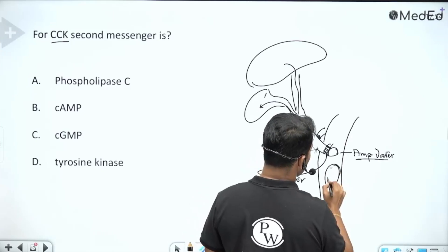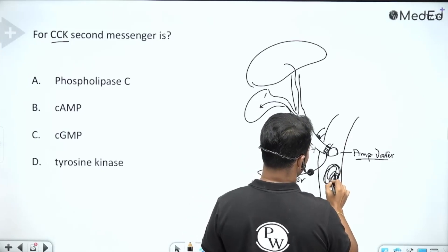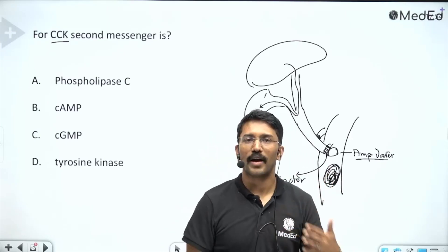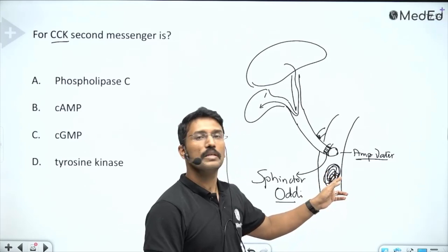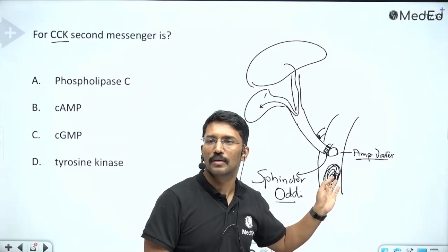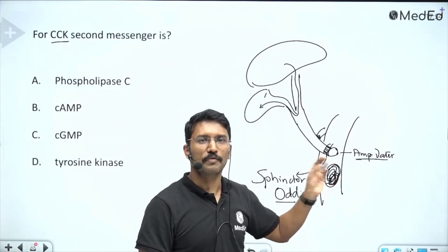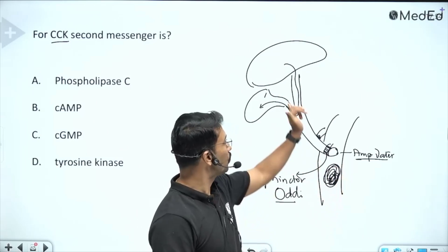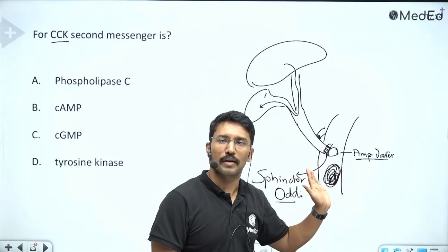When the meal reaches the duodenum, it needs to get mixed with bile because for fat absorption, you need emulsification of fat in the gut. If not emulsified, fat is not water soluble and you will not be able to absorb it. For that emulsification, you need the bile salts coming from the bile.